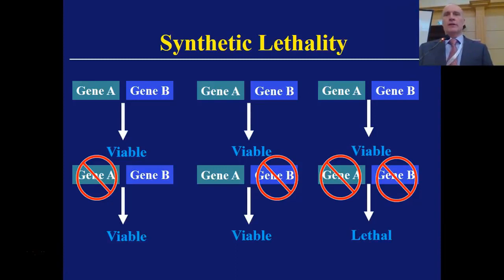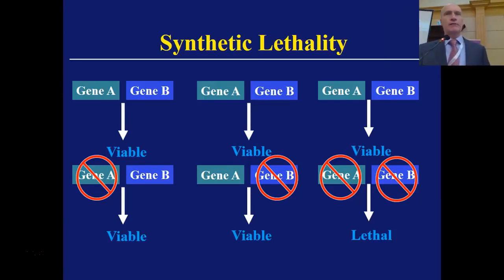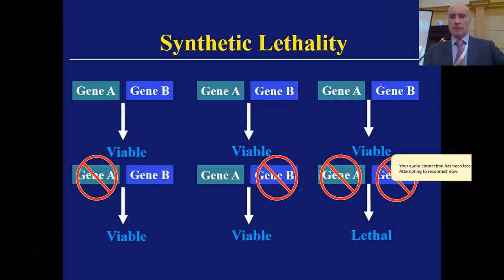This gets us to the concept of synthetic lethality. Why are we talking about this? It was originally observed in 1922 by a geneticist working with Drosophila. They were working with Mendelian genetics, and what they found was if you did defect 1, no problem; defect 2, no problem. But putting defect 1 and 2 together in some cases was lethal. This created a concept that wasn't coined as synthetic lethality until 1946, but it has finally worked its way into the clinical arena.